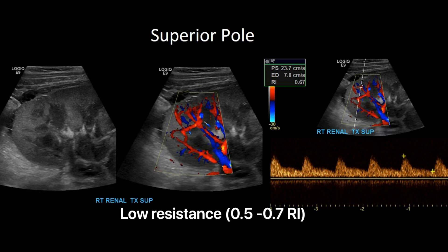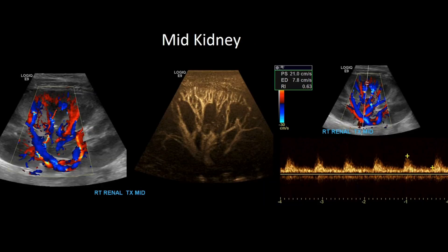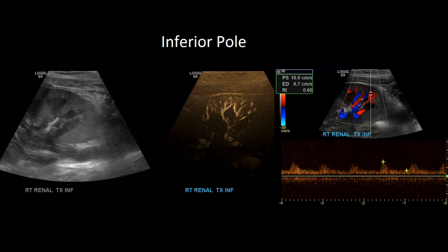After the superior pole, do the midsection — take grayscale, color Doppler, and spectral Doppler images. Here I have a color Doppler, a B-flow image showing the vasculature beautifully, and a spectral Doppler image with a resistive index of 0.63 — that's normal. Then go to the inferior pole: take grayscale, color Doppler, and spectral Doppler. There you can see the resistive index is 0.60 — also normal.